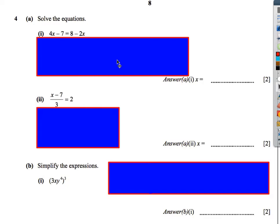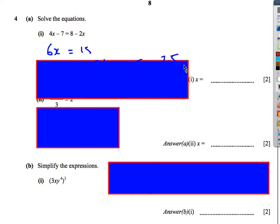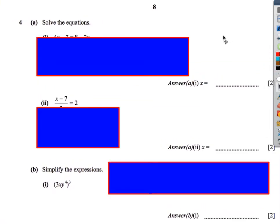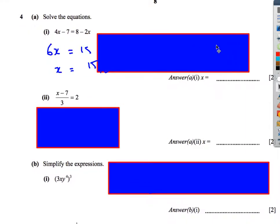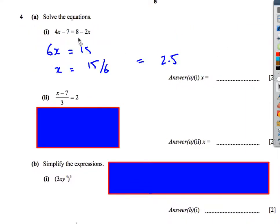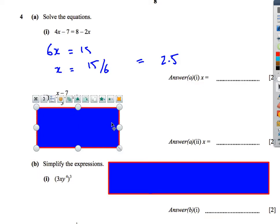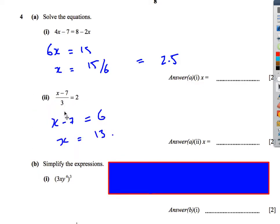Next: solve these equations. We've got 4x minus 7 equals 8 minus 2x. We rearrange: add 2x to both sides to get 6x, add 7 to both sides to get 15, divide both sides by 6 — that gives us 15 over 6. Next one: x minus 7 over 3 equals 2. Multiply both sides by 3 to get x minus 7 equals 6, then add 7 to both sides — x equals 13.